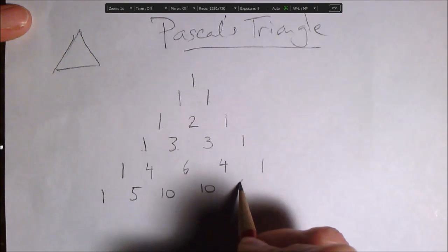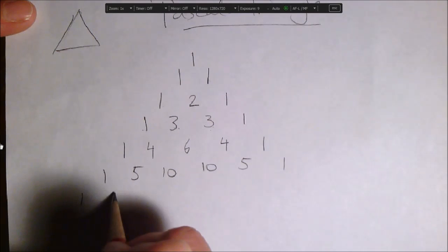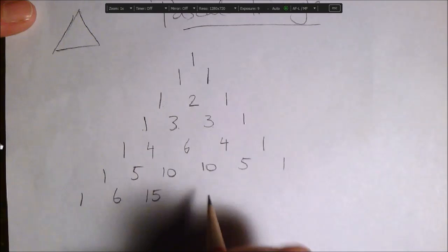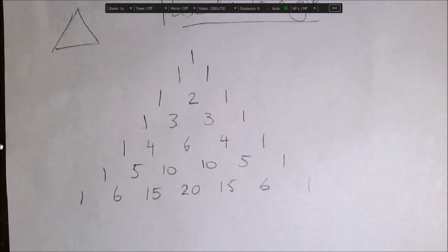One, five, ten, ten, five, one. Okay, just for fun, let's do one last row. One, six, fifteen, twenty, fifteen, six, one. And this is Pascal's triangle.